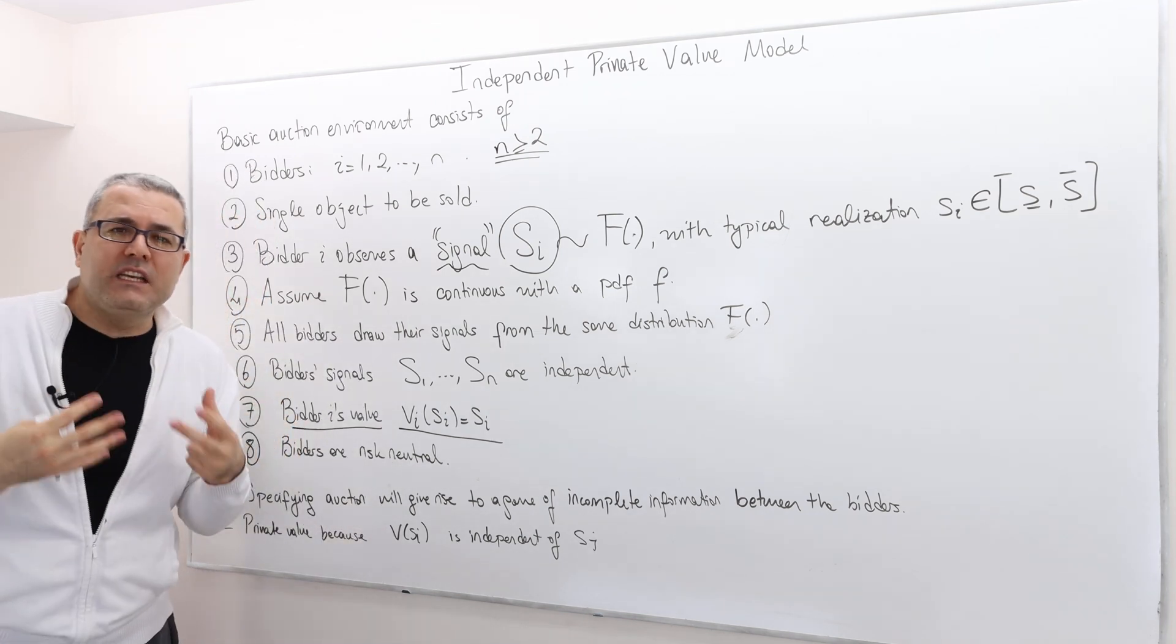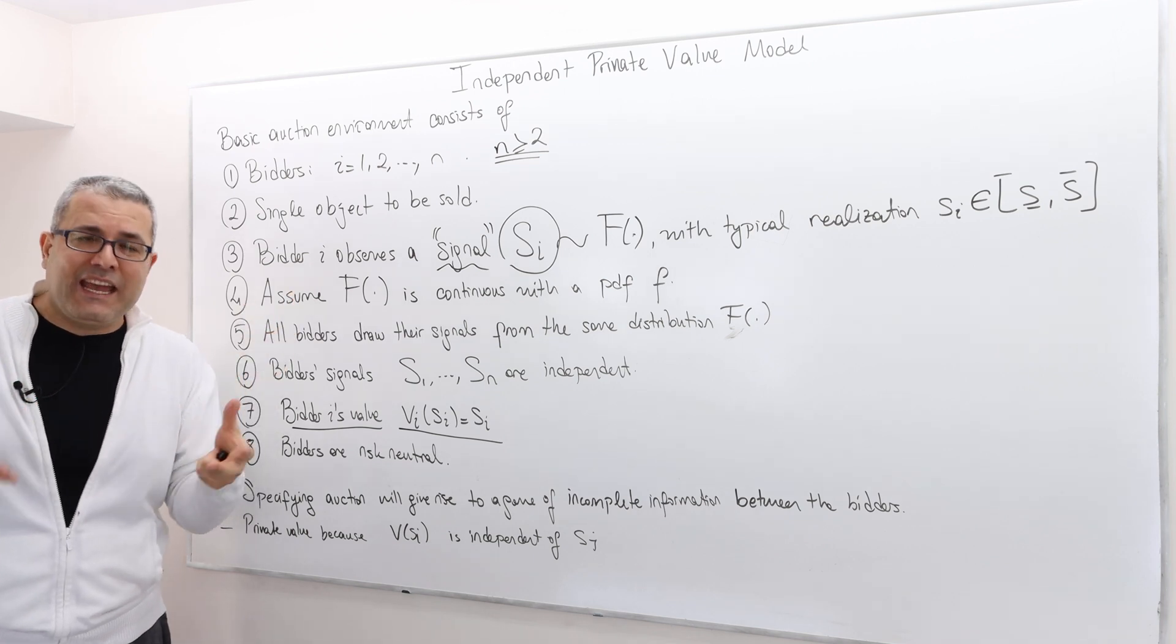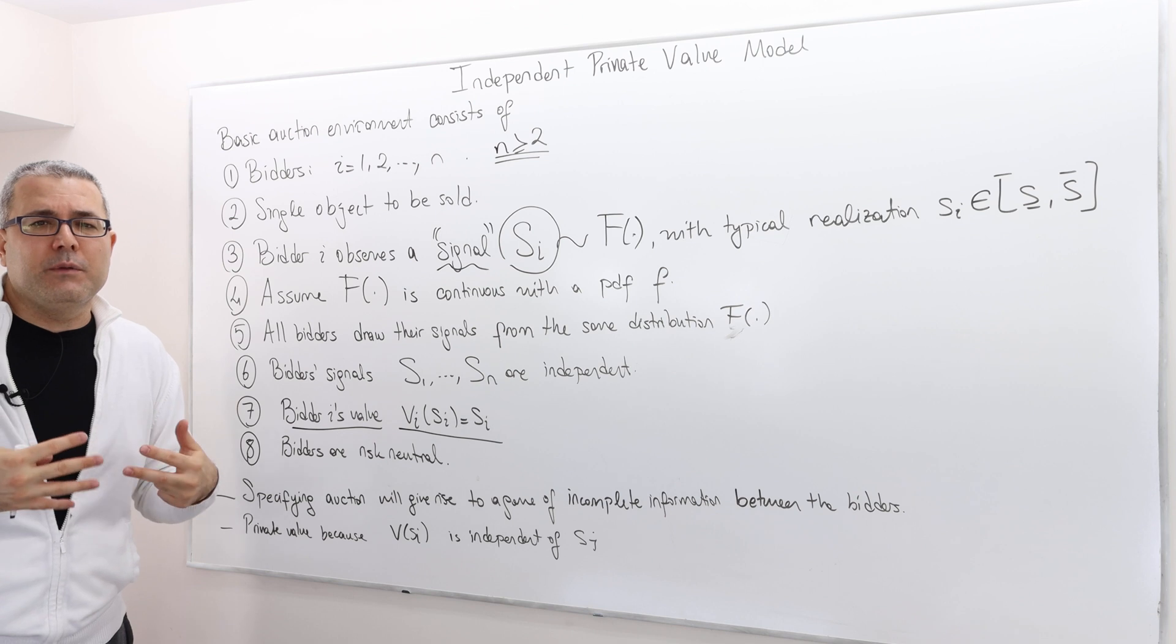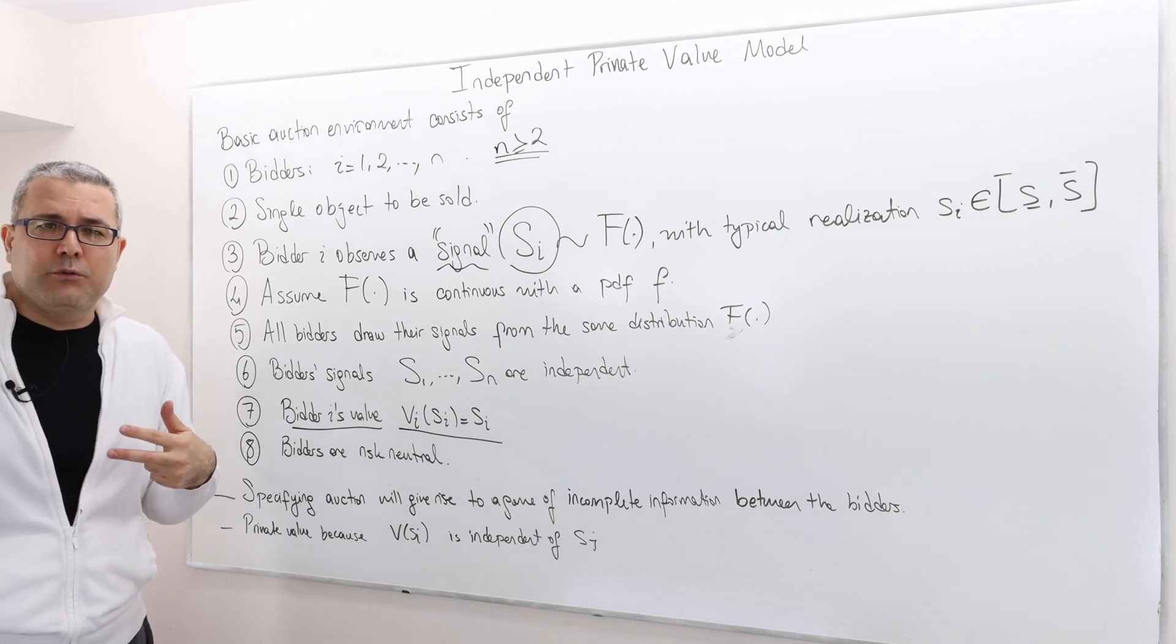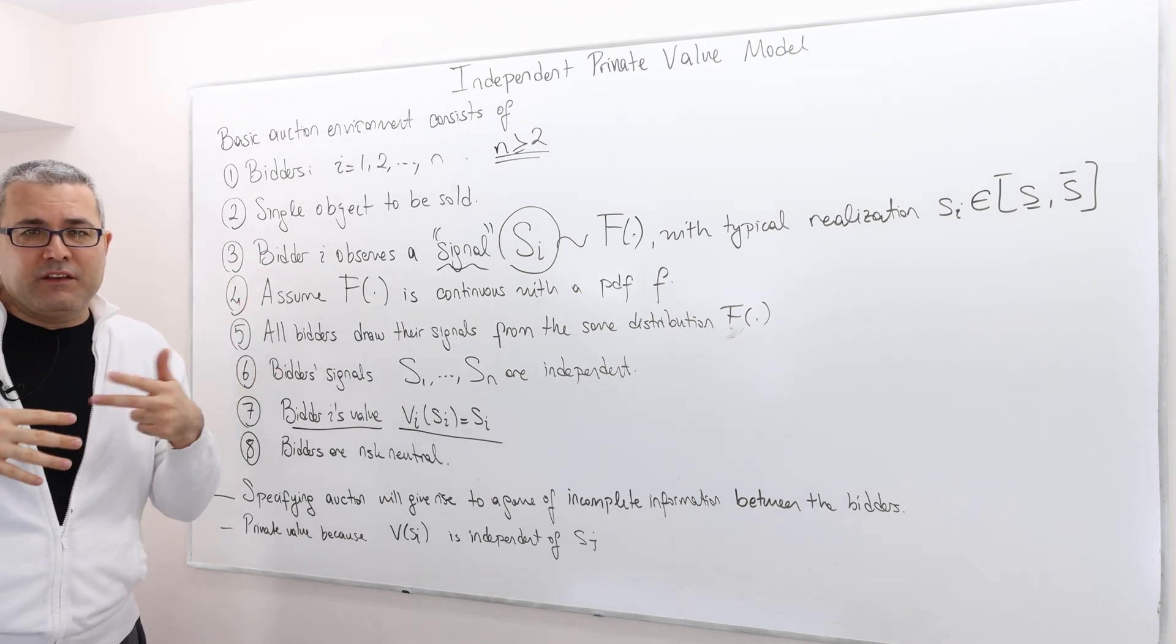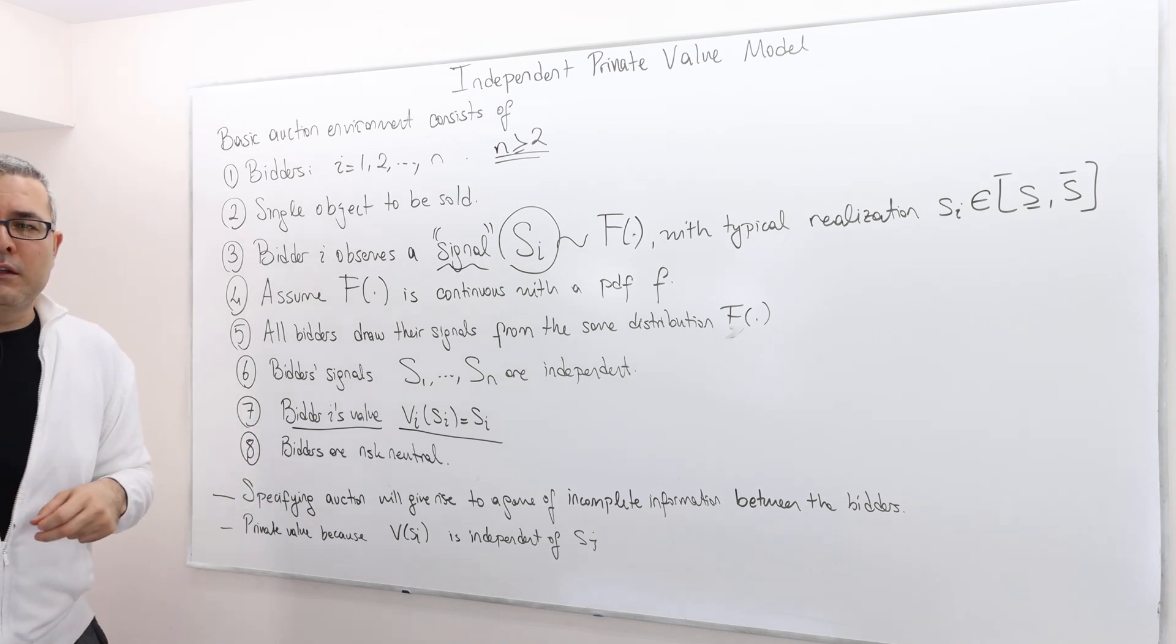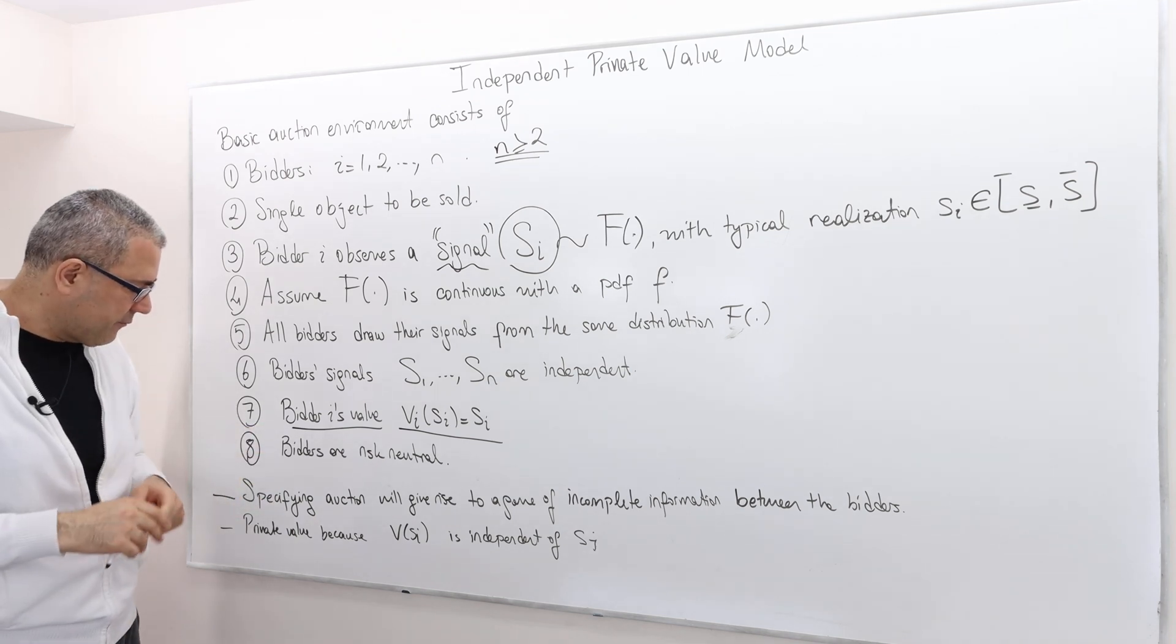And because all sealed bid auctions are static games, most of the times the equilibrium concept we're going to be using is Bayesian Nash equilibrium. Unless we have a stronger equilibrium concept, like for example, a dominant strategy.